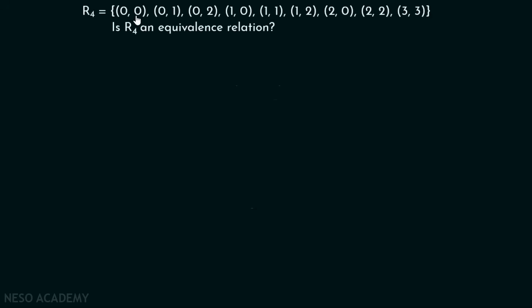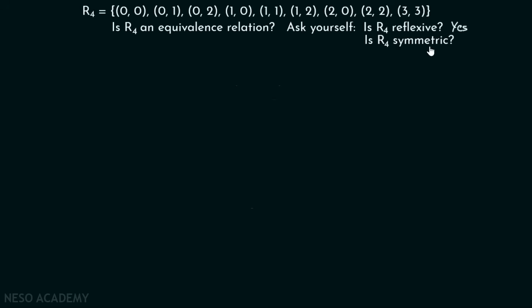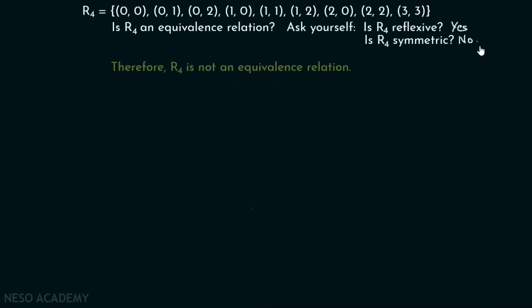Is R4 reflexive? Yes — (0,0), (1,1), (2,2), and (3,3) are all there, so this relation is reflexive. Is R4 symmetric? We have (0,1) and (1,0) — fine. We have (0,2) and (2,0) — fine. But for (1,2), we must have (2,1) in this relation, and there is no ordered pair (2,1). Therefore, this relation is not symmetric, and R4 is not an equivalence relation.